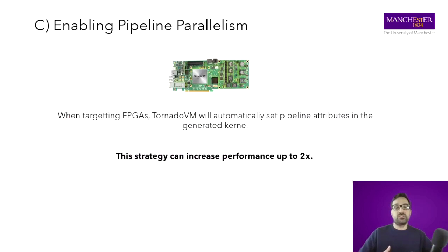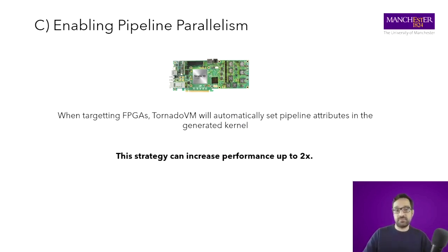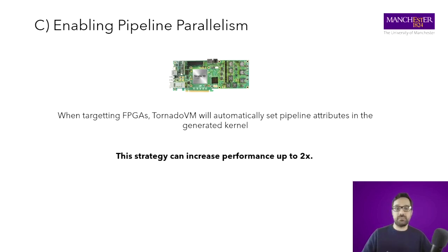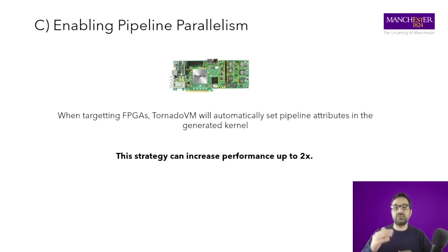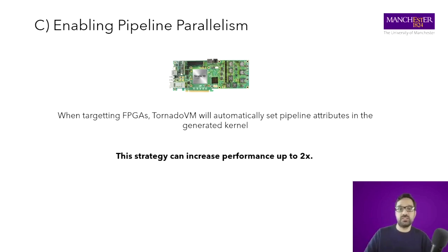TornadoVM can also enable pipeline parallelization, especially on FPGA. When TornadoVM selects FPGA as the target, it automatically inserts information in the generated code to pipeline instructions. By using this strategy, we can increase performance 2x over the previous parallel code.